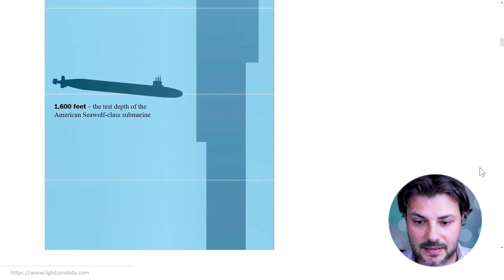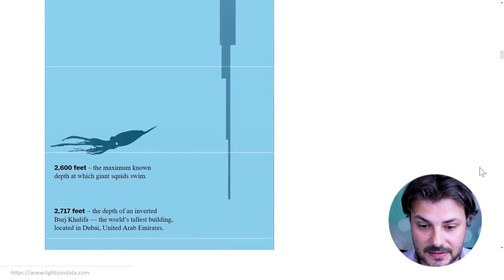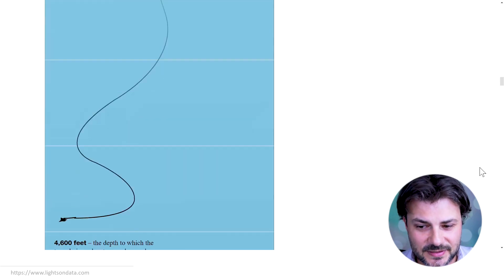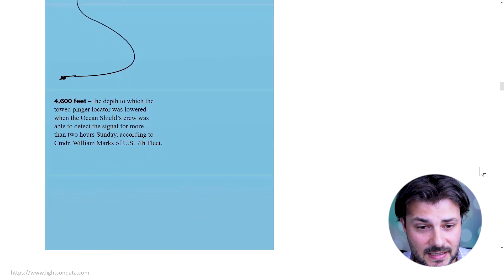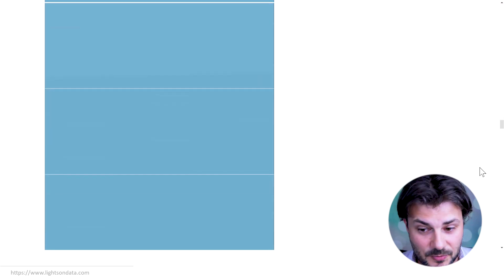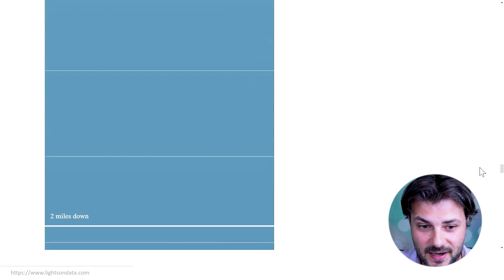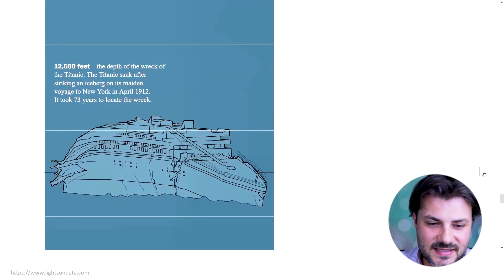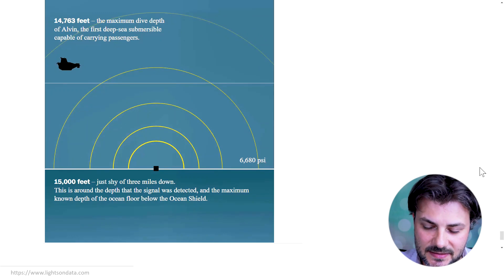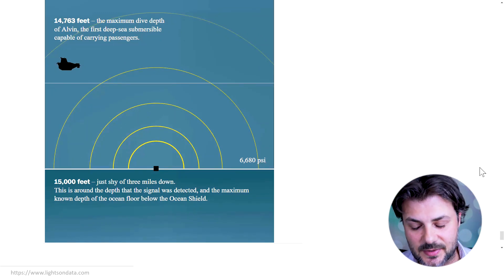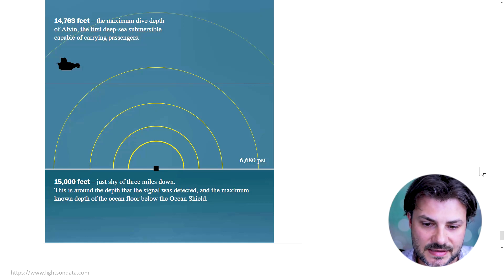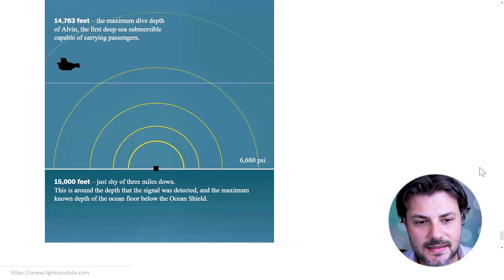We can see well-known landmarks as comparisons for how deep we are — the Empire State Building, then the Burj Khalifa, the world's tallest building. We keep scrolling deeper, and we start to feel that we've been scrolling for maybe 30 seconds. That's the beauty of it: the audience begins to experience just how far the black box really is. We reach the depth of the Titanic wreck, and we still need to go further. Finally, just shy of three miles down, is where the black box needs to be retrieved from. As the audience, we really feel how deep authorities need to dive — through scrollytelling, we understand the depth of the problem.